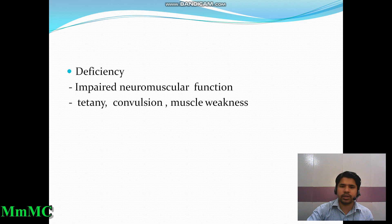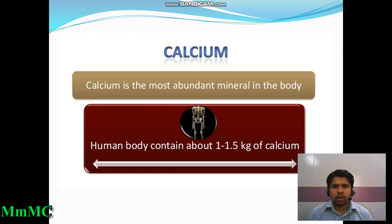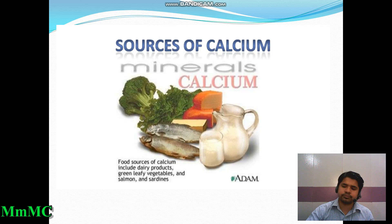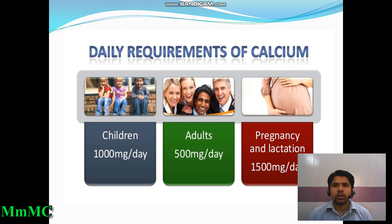Now we discuss calcium. Calcium is the most abundant mineral in the body. The human body contains about 1 to 1.5 kg of calcium. Food sources of calcium include dairy products, green leafy vegetables, salmon fish, and sardines. The daily requirements of calcium vary according to age, sex, and physical condition.